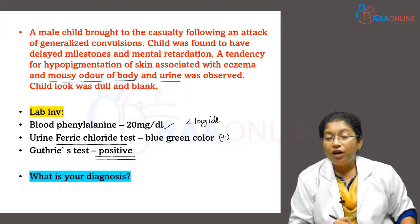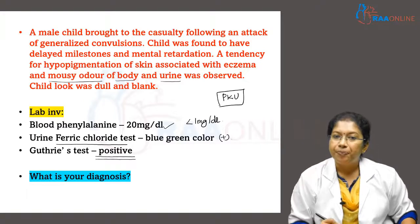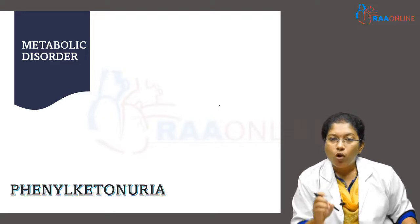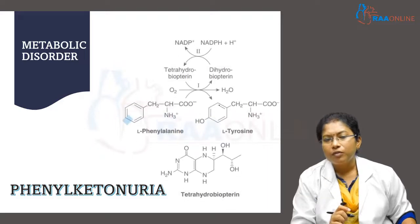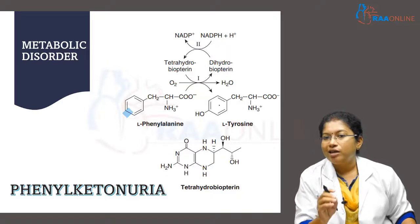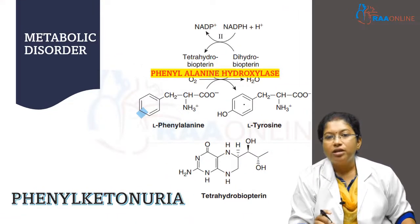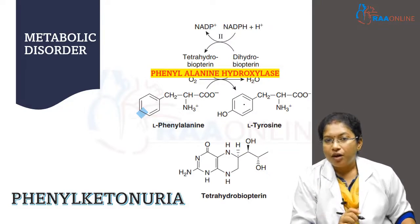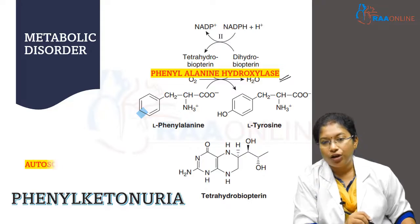This is a clear-cut case of classical phenylketonuria — an inborn error of metabolism. The enzyme involved in the conversion of phenylalanine to tyrosine is phenylalanine hydroxylase (PAH monooxidase). This enzyme is defective in this case, which is why it is called classical phenylketonuria.